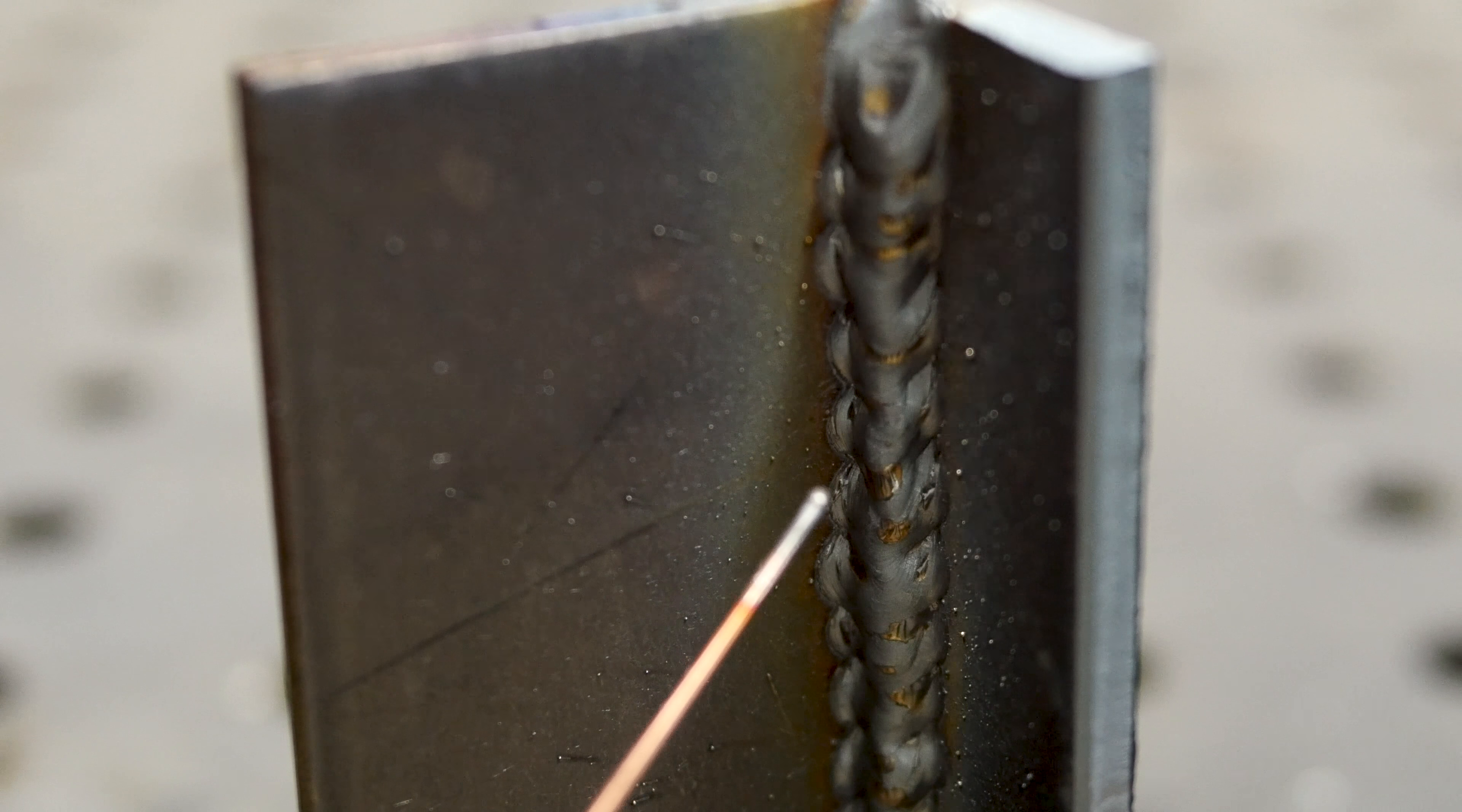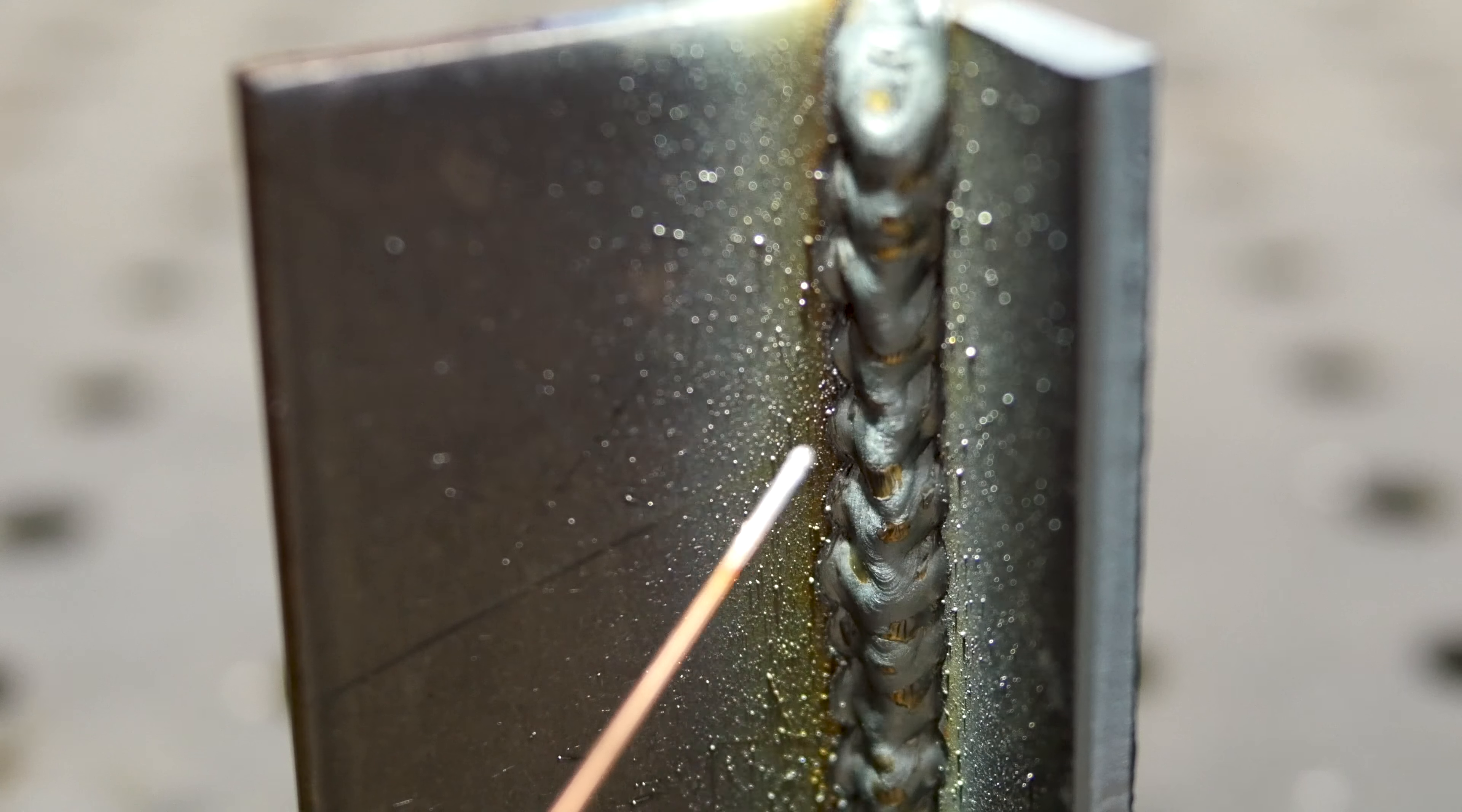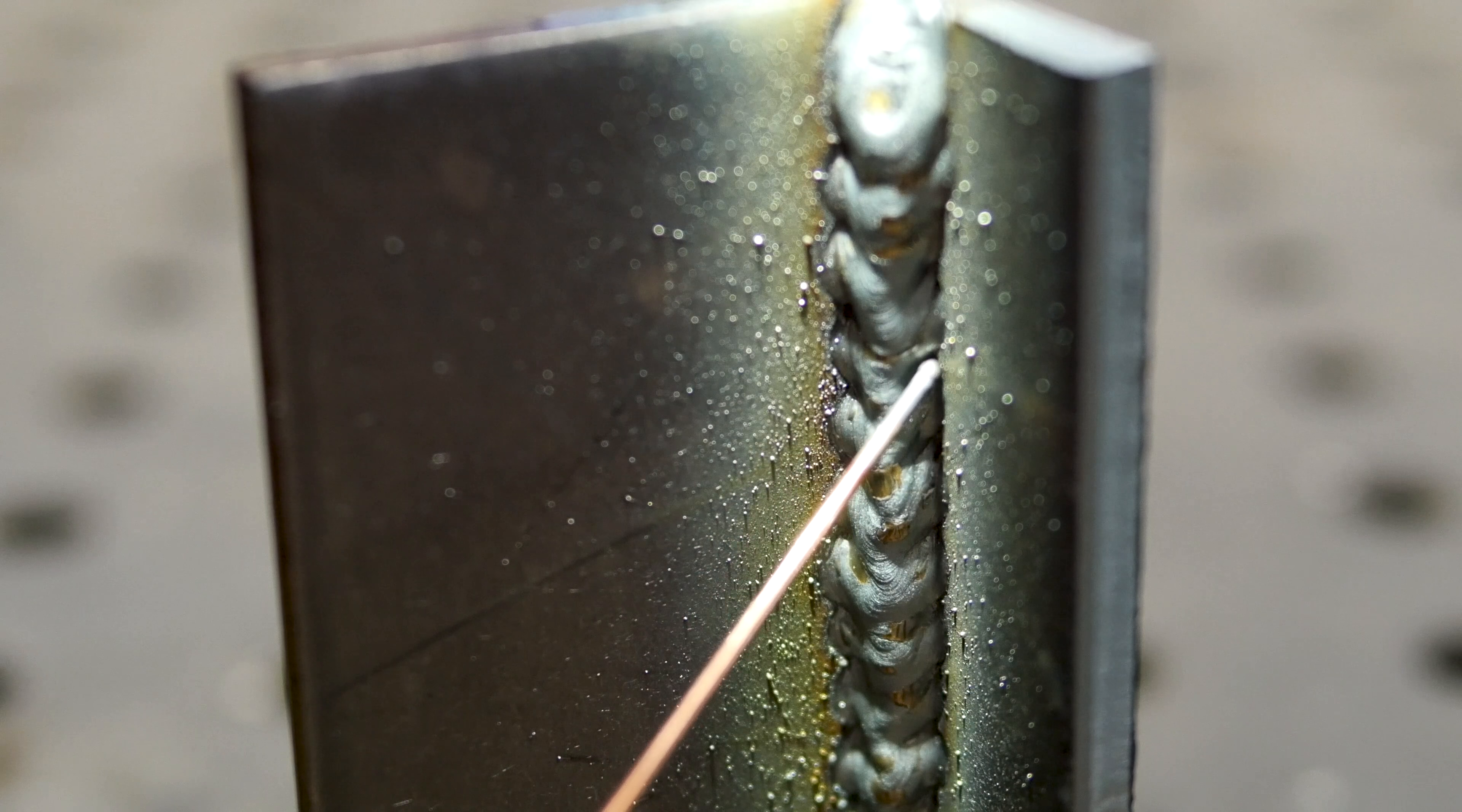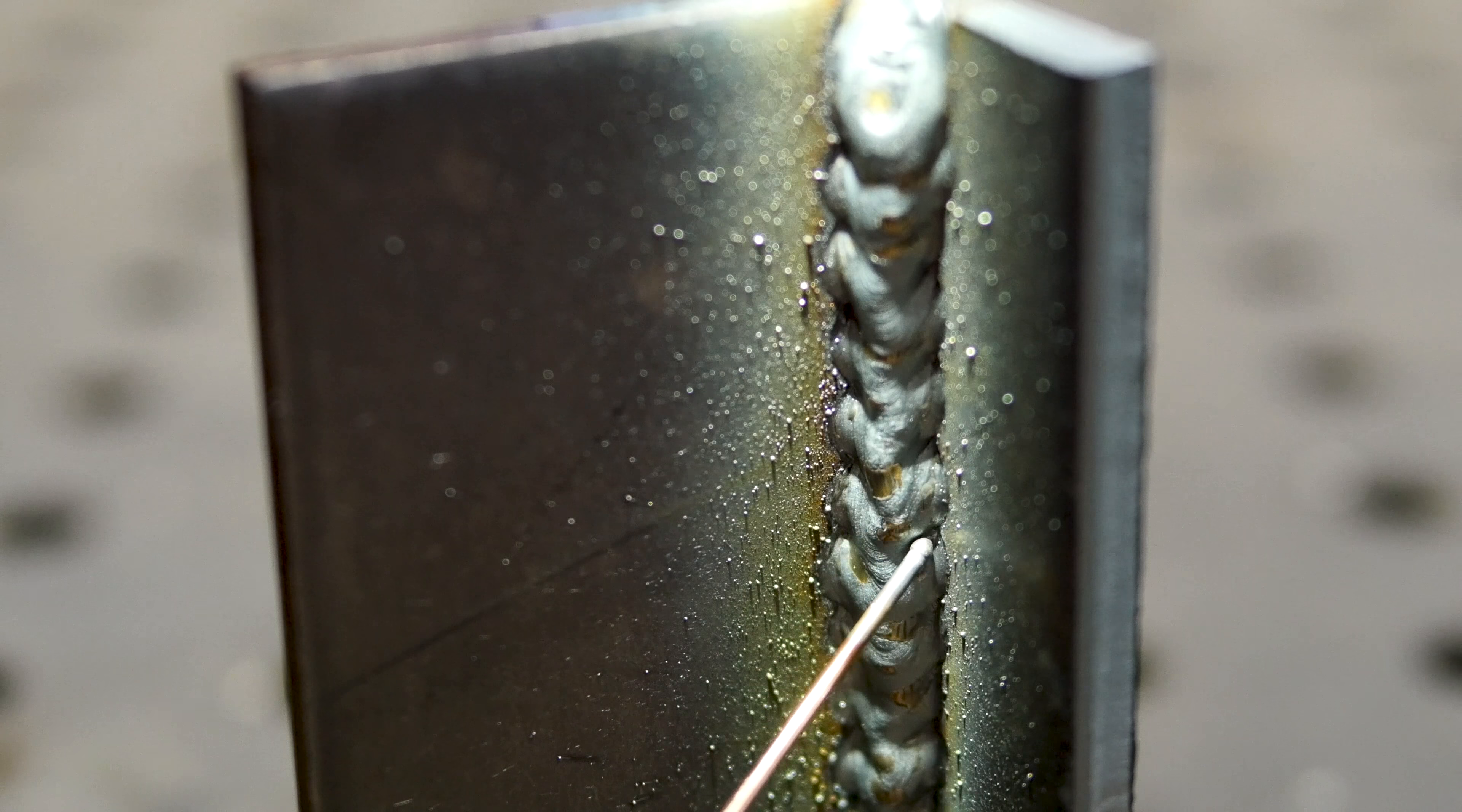An easy way to check for undercut is to take a flashlight and shine it down the length of the weld. Wherever you see shadows, that's where you know that the filler metal didn't fill back in the base metal.